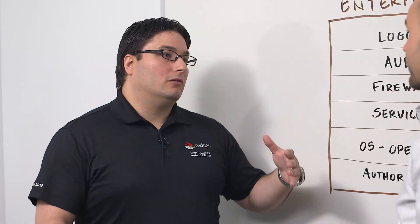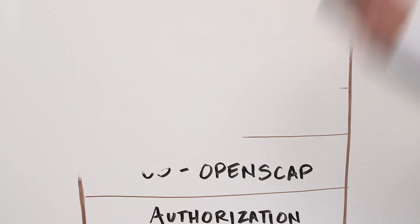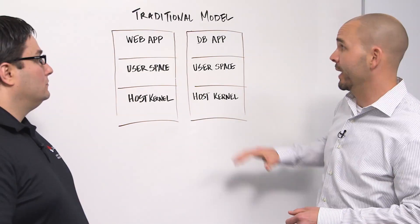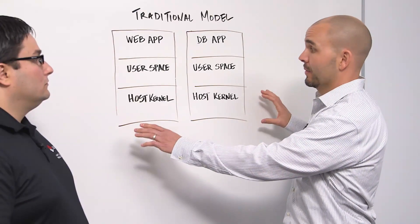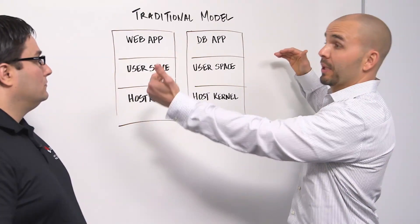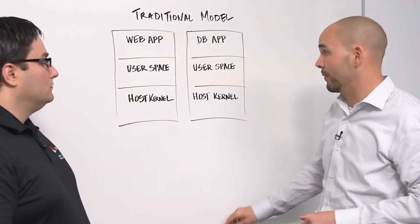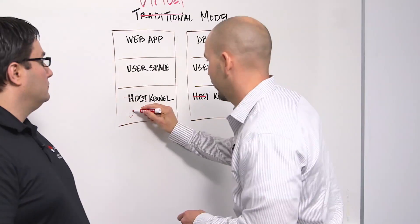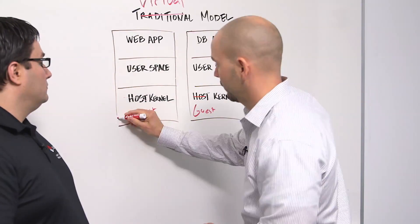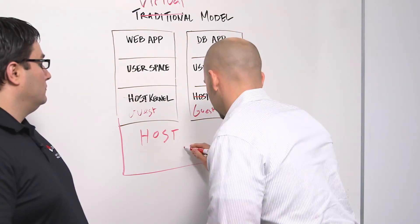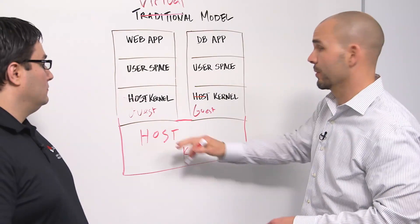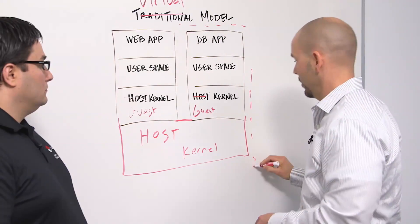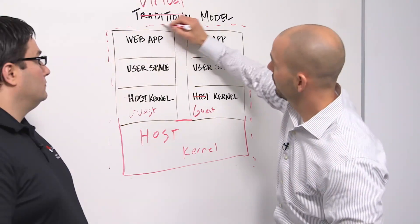Now that we've talked about the enterprise, let's go into some of the security considerations within the virtualized components. Before we start talking about the virtual model, let's take a step back and look at the traditional model where a lot of these agencies are today. We have physical separation — think of these as separate servers — with a host kernel, user space, and then our applications such as a web app and database. As we move forward into the virtual realm, this changes to shared resources, where these virtual machines all access one host kernel on one physical server.